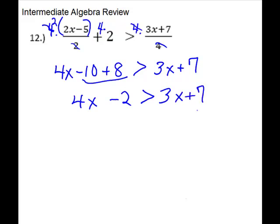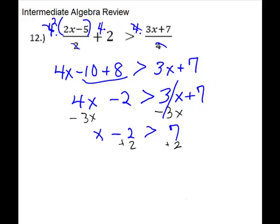This is a linear inequality — it doesn't have two symbols like the last one. We'll just isolate the variable. I like to keep my variable on the left to make the graphing easier, so I'm going to subtract 3x from both sides. It cancels from one side, and gives me just an x on the other, so x minus 2 is greater than 7. Add 2 to both sides, and x is greater than 9.